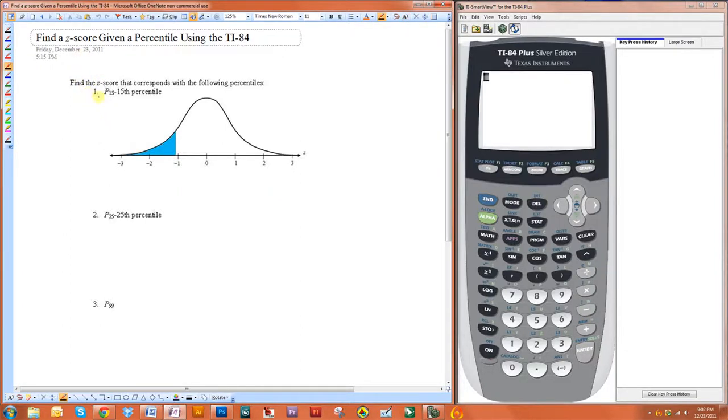In this video we want to find a z-score given a percentile. For example, if we want to know the z-score that corresponds to the 15th percentile or P15, what we're looking for is if there is a normal curve, the area under this curve is 15% or 0.15.